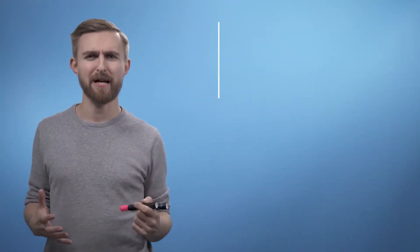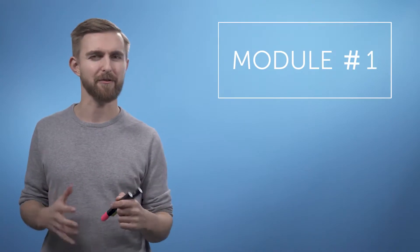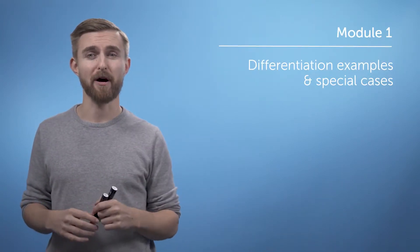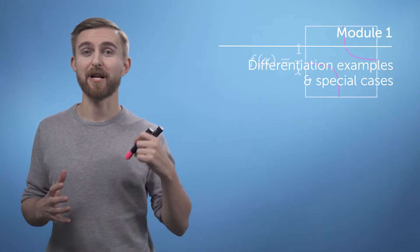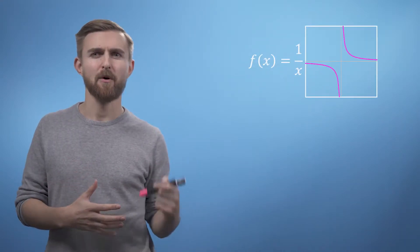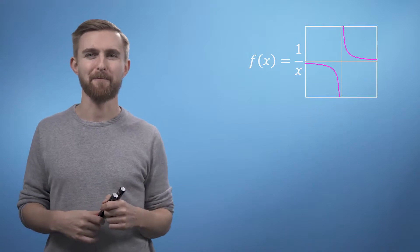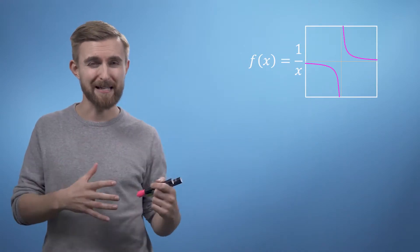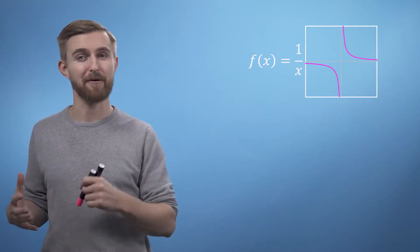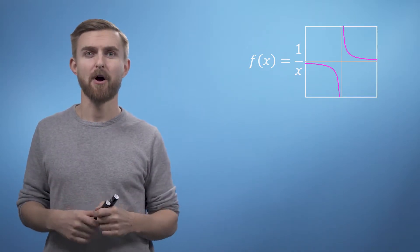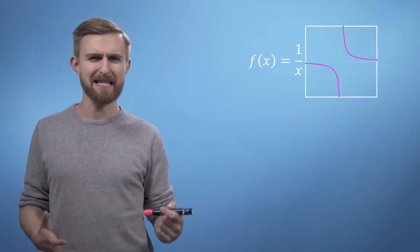In this video we're going to run through three special case functions which give us interesting results when differentiated. The first example we're going to work through is the function f equals 1 over x, which you can see plotted in the corner. Now take a minute to notice that the gradient of this function is negative everywhere, except at the point x equals 0, where we can't see what it is.